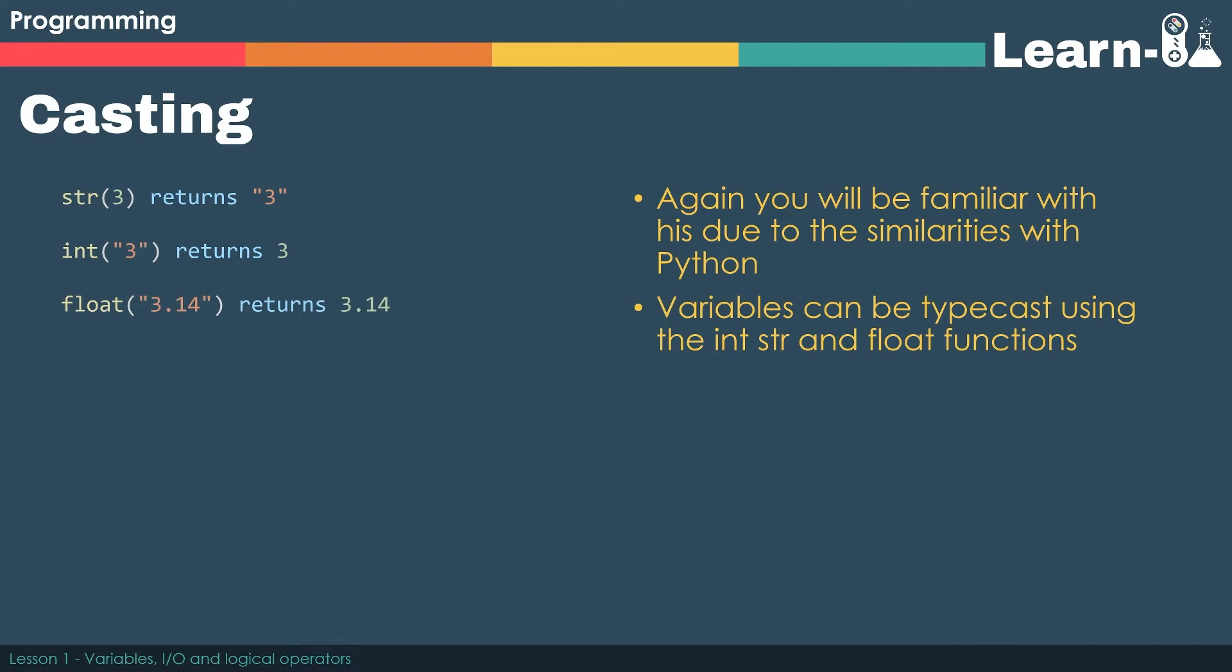Casting also works the same way as in Python. If you pass the integer 3 to the string function, it will evaluate to a string value of the original data and this will be then returned. The int function will convert a string 3 to an integer, and finally a string of 3.14 would be evaluated to a floating point number using the float function.